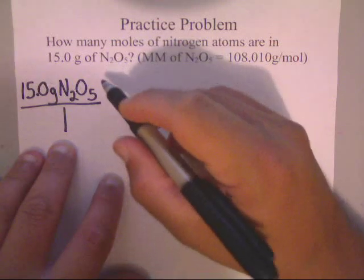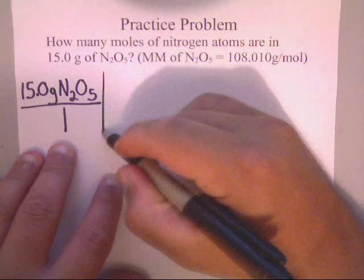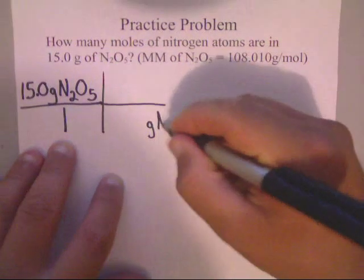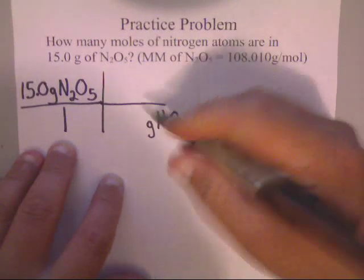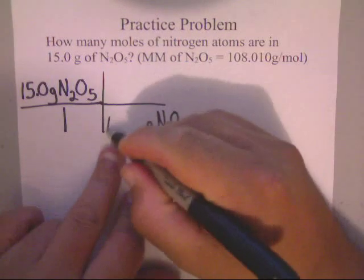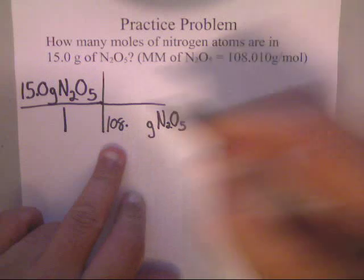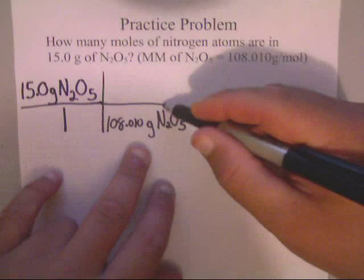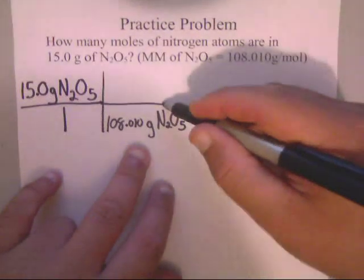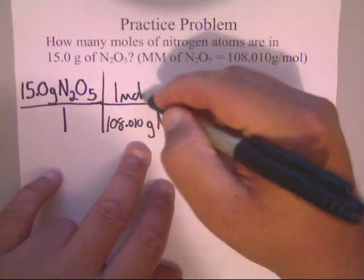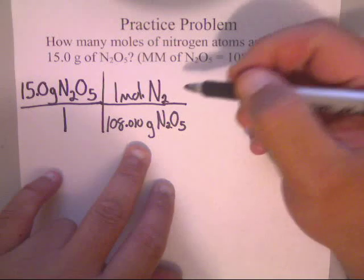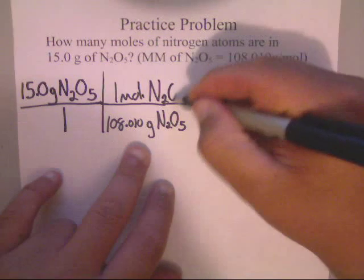So our next step is to match up our units diagonally. Down here will be grams of N2O5. Now what is the molar mass? The molar mass of this is 108.010 grams per mole.